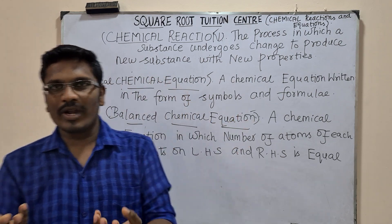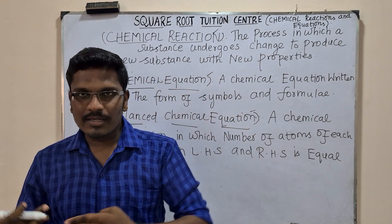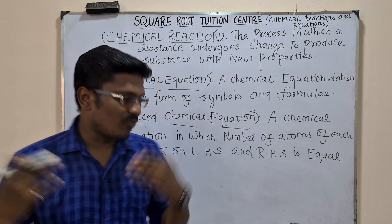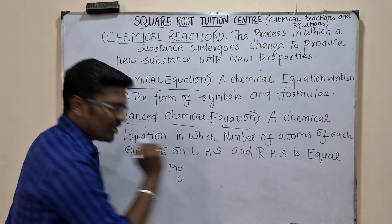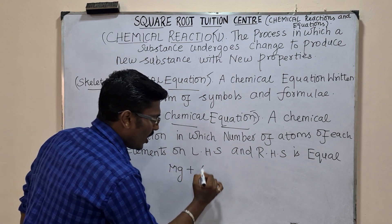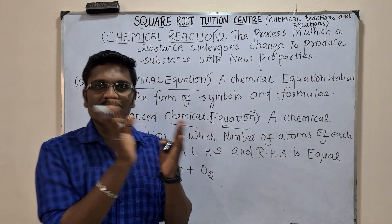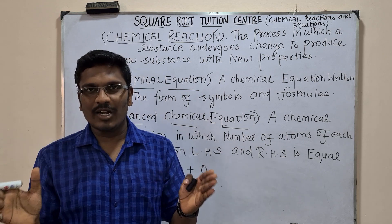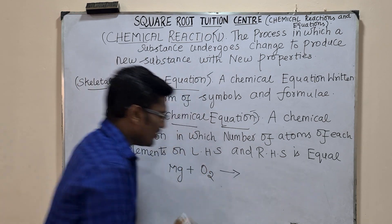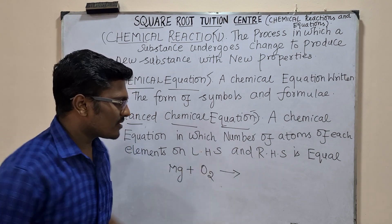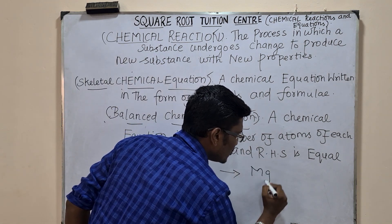For example, magnesium burnt in oxygen. We write Mg for magnesium, burnt in oxygen — in the presence of air we use oxygen. On the reactant side we have Mg and O₂, and on the product side we use MgO.